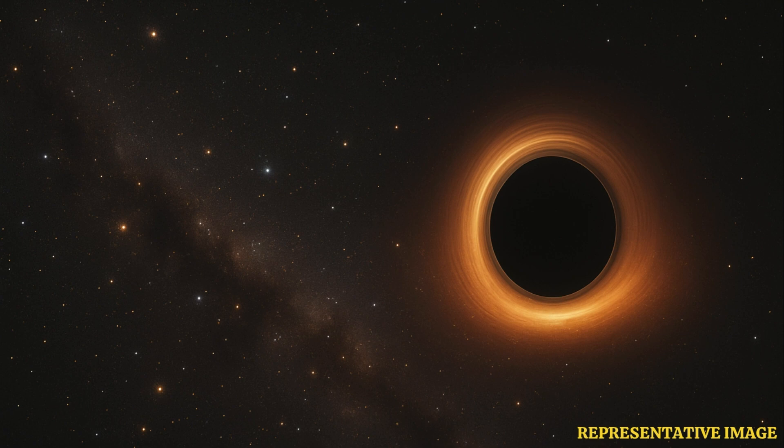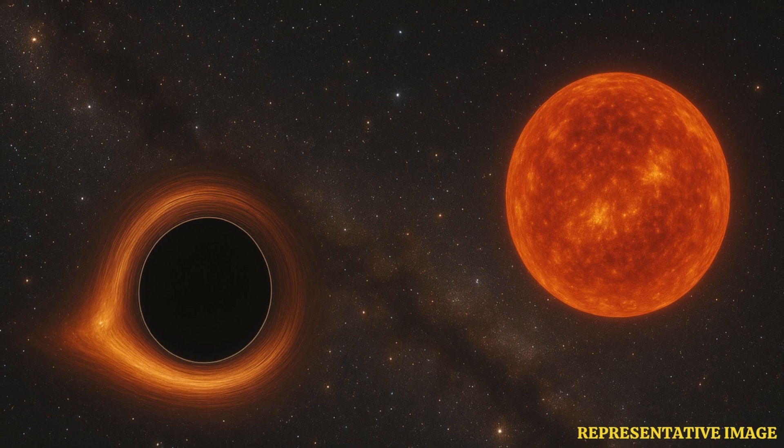Wow, that is small for a black hole. It really is. It kind of pushes the boundary of what we thought was the minimum size. Right. And the other reason for the name, it's in a binary system. Meaning it orbits another star. Exactly. It's orbiting a red giant star, V723 Amon.